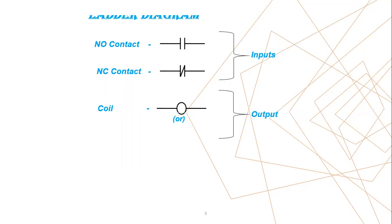In ladder diagrams, the basic symbols are NO contact, NC contact, and coil. In this, NO contact and NC contact are used as inputs, and coil is used as output. If you have doubt what is input or output, in the previous video we have explained in detail, so kindly check that video.